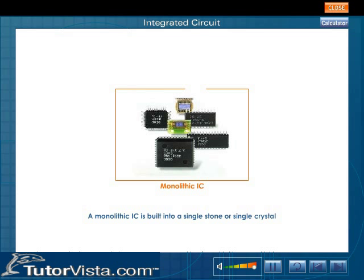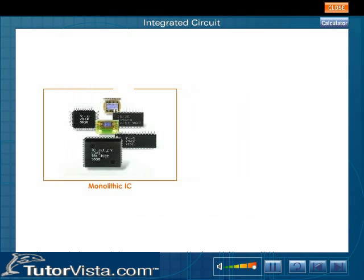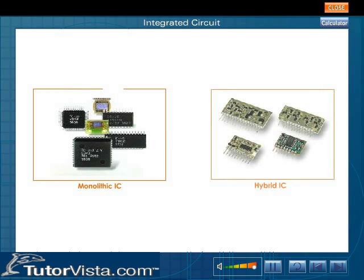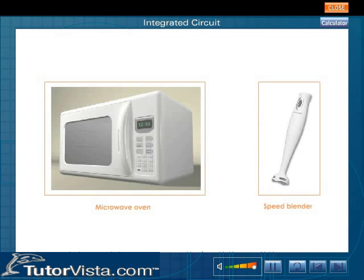Thus, a monolithic IC is built into a single stone or a single crystal. The hybrid IC is a micro circuit consisting of passive elements formed on a common dielectric substrate. Most digital circuits use monolithic ICs, while hybrid ICs are used in microwave ovens and speed blenders.